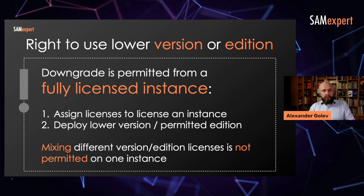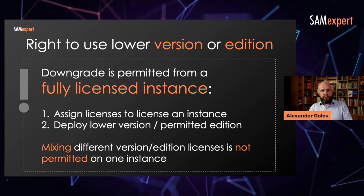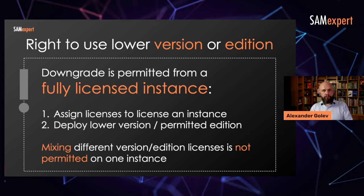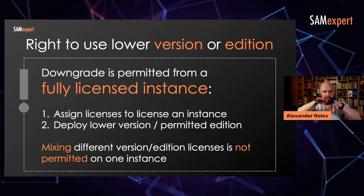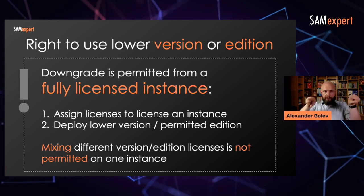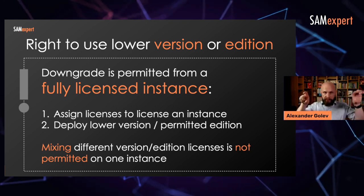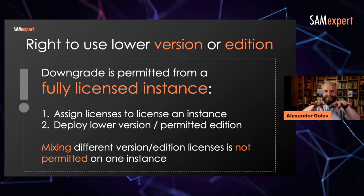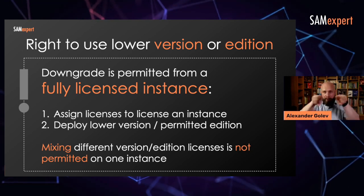A customer asked if they can assign 12 core licenses of Windows Server 2016 and four core licenses of Windows Server 2019 — so mixing versions — for a single instance. With those mixed licenses, they may not create a properly and correctly licensed place for that server instance. They have to have exactly the same version and edition of licenses for one instance.